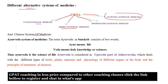Ayurveda system of medicine came from the Sanskrit word. In Sanskrit, 'Ayur' means life and 'Veda' means holy knowledge, also called science. That means in simple words, Ayurveda means the science of life — understanding life science. The name Ayurveda came from Sanskrit: Ayur means life, Veda means knowledge, so Ayurveda means knowledge about life.